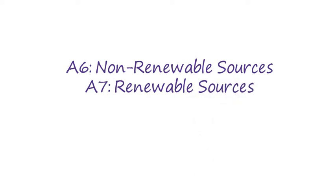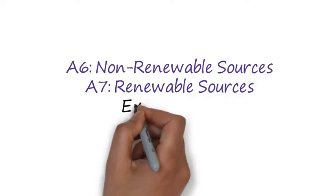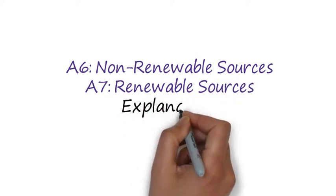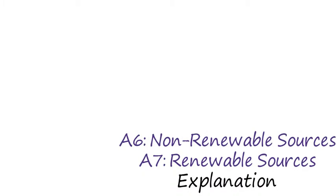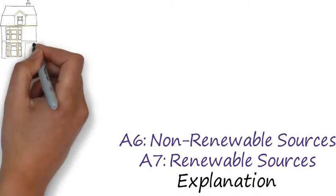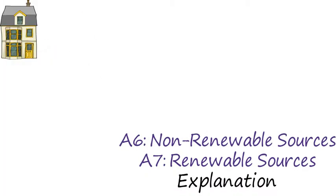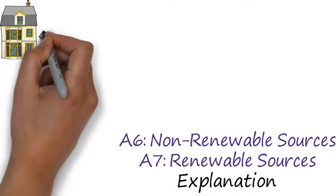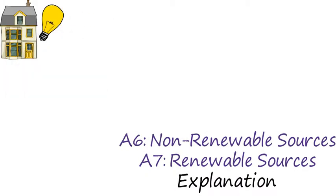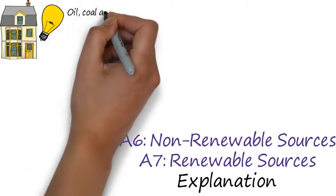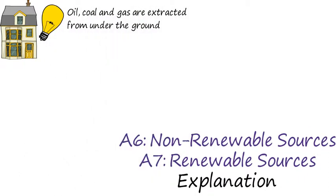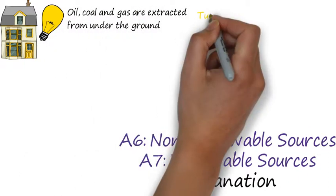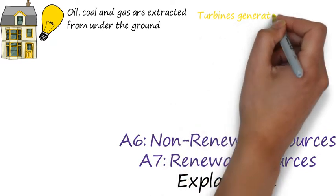We know from topic A5 that our homes are mainly powered by electricity as well as gas, oil and coal. But how do we produce electricity? The answer lies beneath the ground in fossil fuels. Oil, coal and gas are extracted from under the sea and under the ground and are burnt to produce energy which powers electric generators.